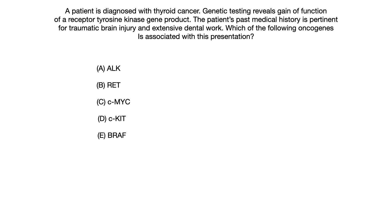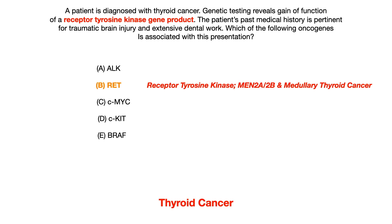The correct answer to this question is choice B, RET. I've highlighted for you in the question what the important piece of information is. The gene product from this oncogene is a receptor tyrosine kinase, which means you need to look down your answer choices and ask yourself which one of these oncogenes codes for a product that's a receptor tyrosine kinase. There are only two answer choices that are even a receptor tyrosine kinase, and of those two, you need to know which one is associated with a type of thyroid cancer.